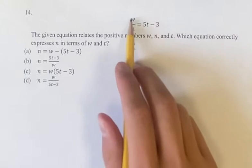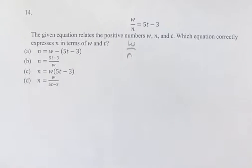So what we want to do is take this equation and isolate n and set it equal to everything else.